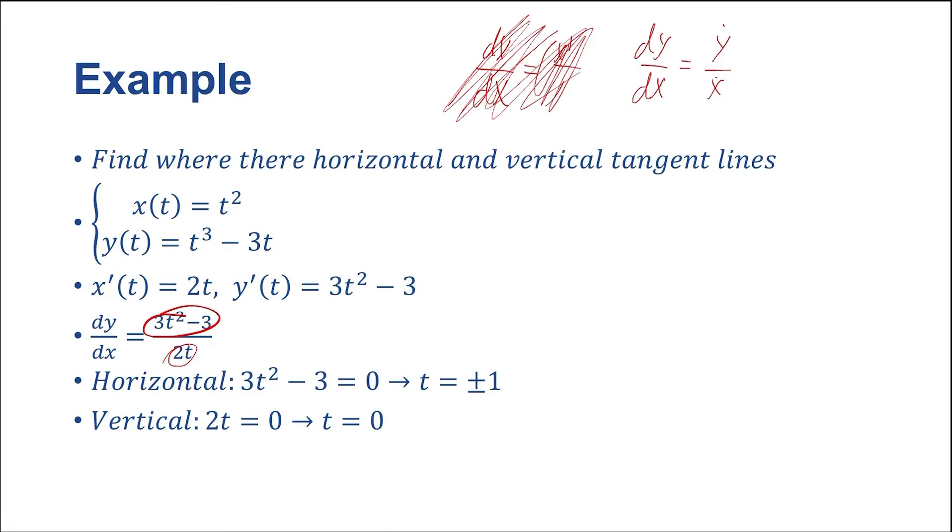Now, we also have a vertical tangent line. And so to do this, we set the denominator equal to zero to give us an undefined slope value. So when we solve for this, we get that t equals zero.